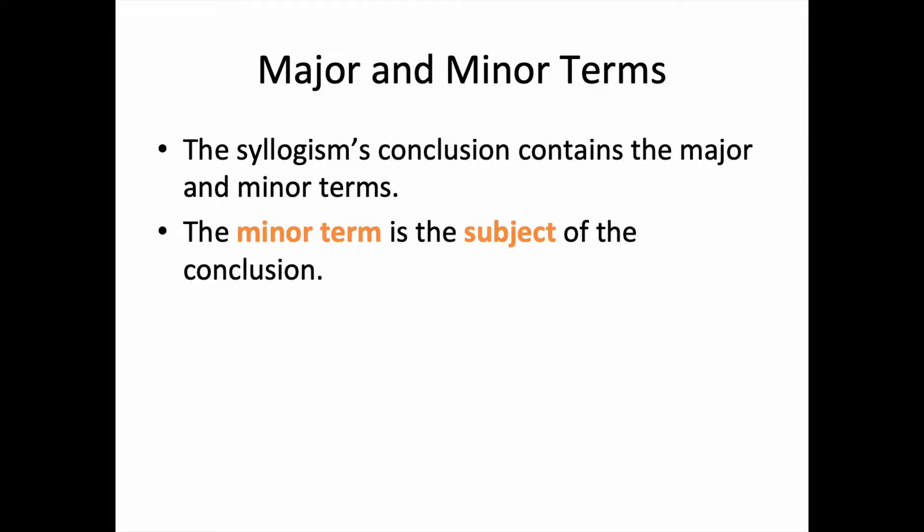Peruse these before moving on. The syllogism's conclusion is how you identify the major and minor terms. The minor term is the subject of the conclusion. The major term is the predicate of the conclusion.